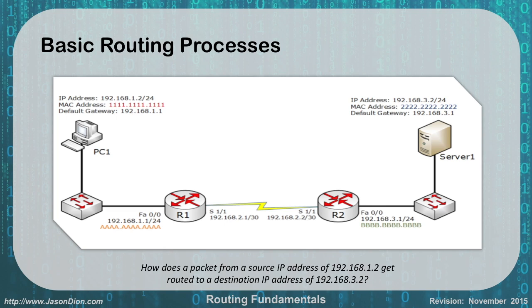The way our routing works — we want to know how information gets from something like PC1 to Server 1 in this diagram. It's going to do that based off the source and destination IP addresses. When we look at how information is going to get from 192.168.1.2 in the upper left corner to 192.168.3.2 in the upper right corner, they're on two different networks. We have to route that traffic across between routers one and two.